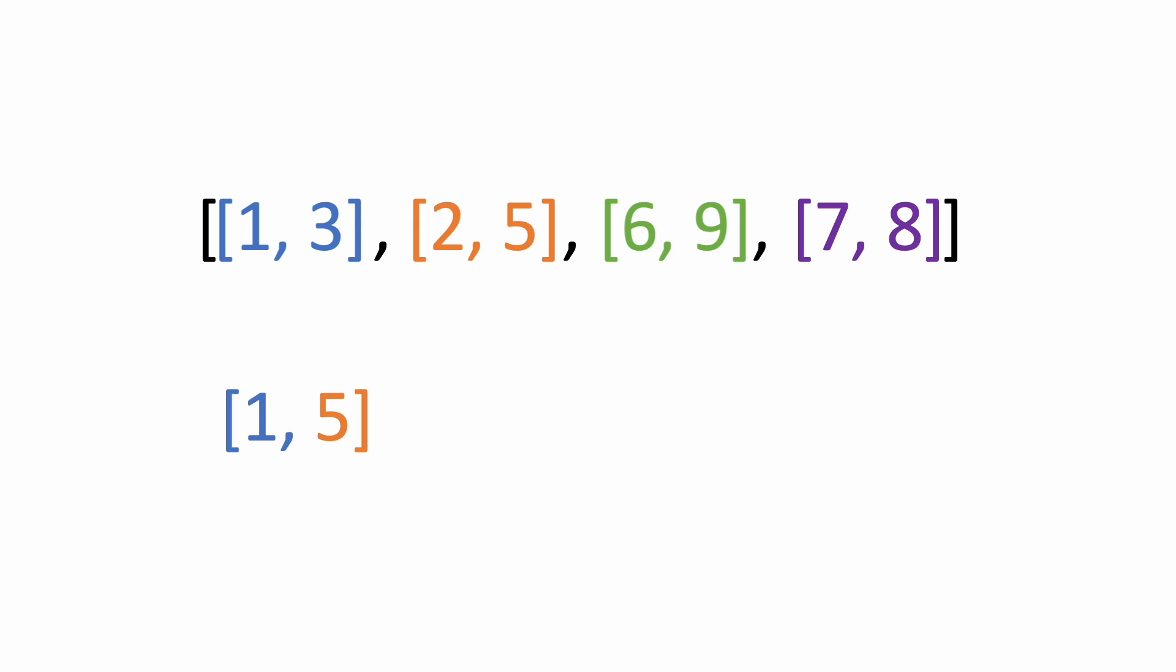Then we do the same thing, but this time use our new merged interval as our first interval. Here, the ending value of the first interval is 5, which is less than the starting value of the second interval, which is 6. That means that there is no overlap, so we'll just add the interval of 6 to 9 to our answer.